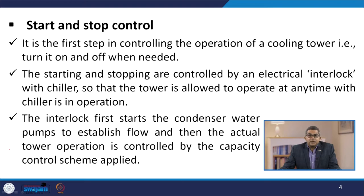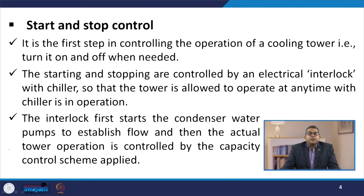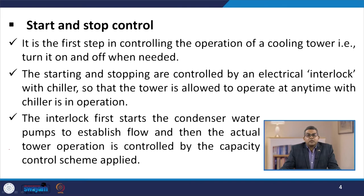Let us start with the start and stop control. This is the first step in controlling the operation of the cooling tower — turning it on or off when needed. The starting and stopping are controlled by the electrical interlock with the chiller, so that the tower is allowed to operate only when the chiller is in operation. The interlock first starts the condenser water pump to establish flow, and then the actual tower operation is controlled by the capacity control scheme applied to that particular cooling tower.